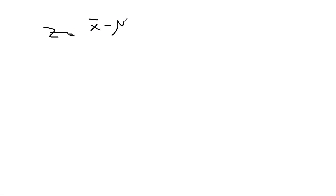We introduce the concept of the general Z, which is equal to X-bar minus mu over sigma divided by the square root of n. We call this piece the standard error, and to introduce this concept we had to talk about the SDM.